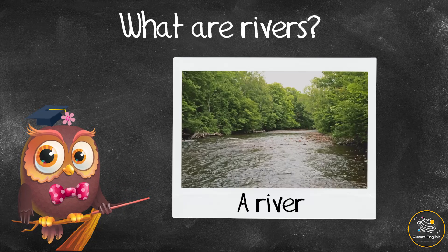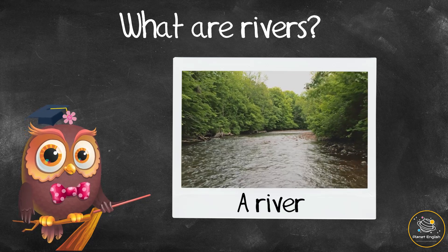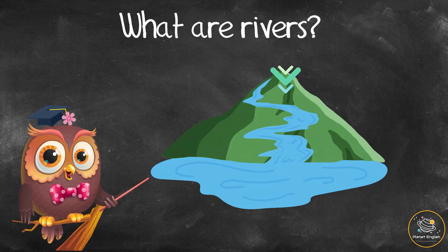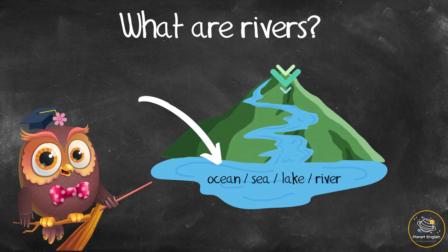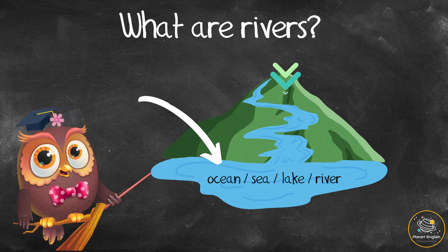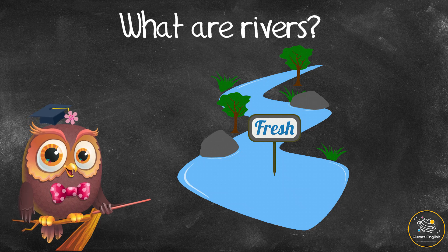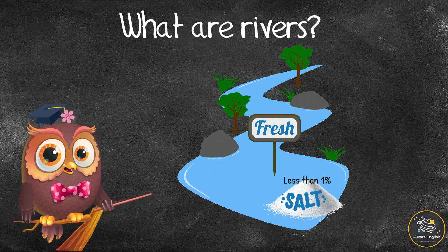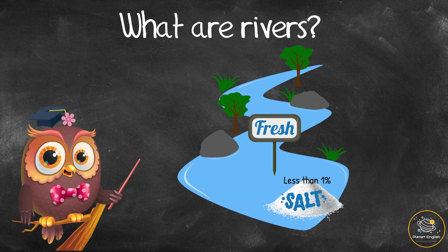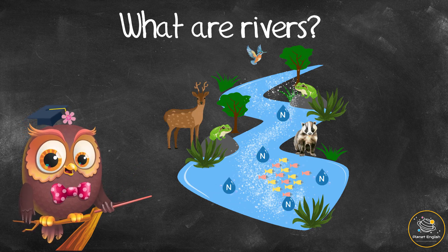What are rivers? A river is a natural moving stream of water that flows on the earth's surface. A river flows downhill towards another body of water like an ocean, a sea, a lake, or another river. The water in rivers is fresh water, which means it contains less than one percent salt. However, rivers still carry important salts and nutrients for the plants and animals living in or near them.